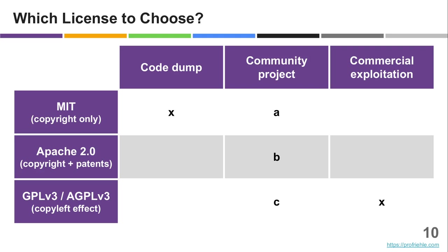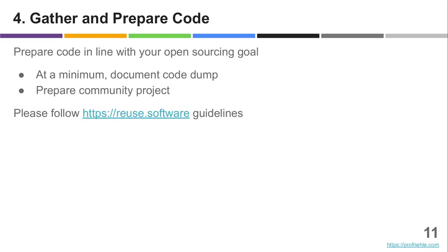While you as the original 100% copyright holder can do a dual license and sell a traditional license or subscription to your software. That's a long story that goes too far here, but as you look into commercializing, you will have to consider this as well.